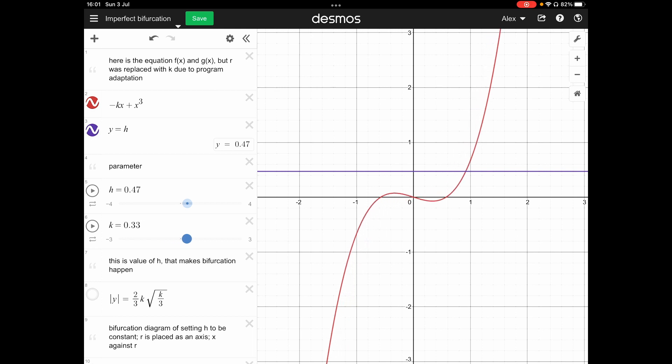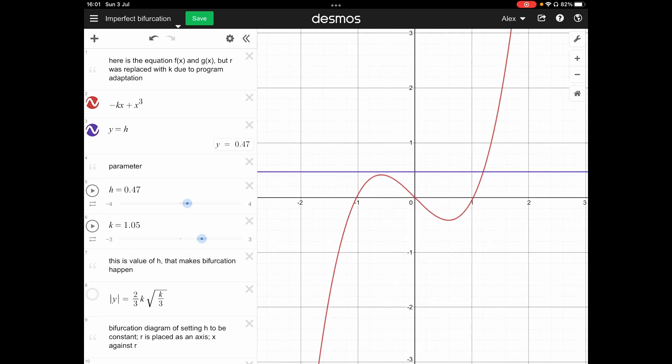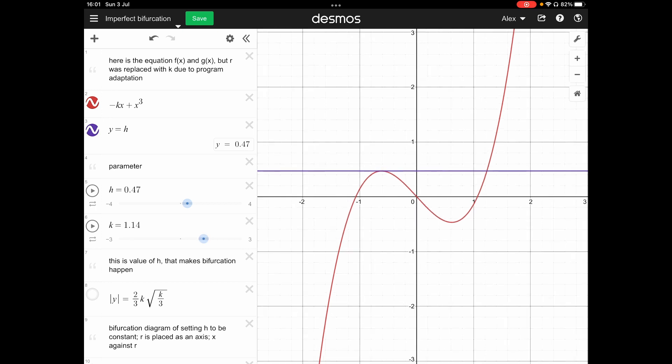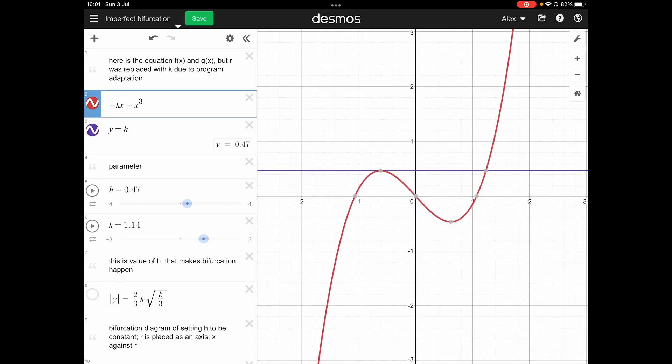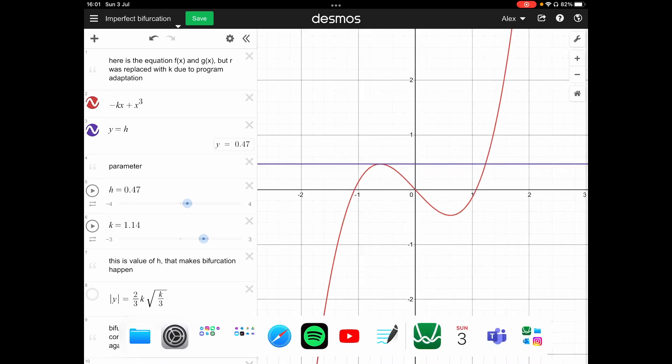As you're increasing the r, you can see that the bifurcation no longer happens at x equal to zero. But you can see the left side is having some dots intersecting. For example, this dot. It's not pointing out. Okay, this dot.